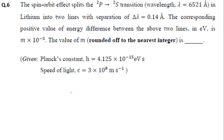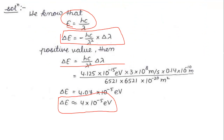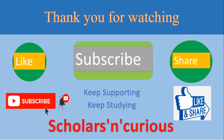So the value of M is 4. That covers all the questions from the atomic and molecular physics portion of GATE. I hope you liked the video. If you did, please subscribe to the channel and share with your friends. Thank you.